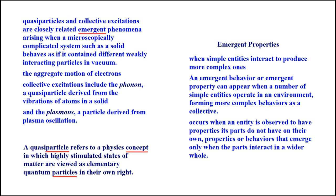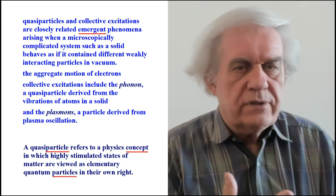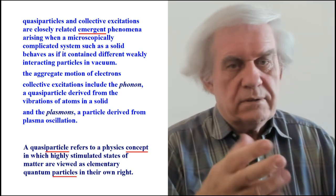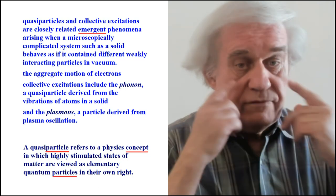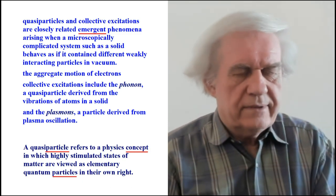Here are emergent properties. When simple entities interact to produce more complex ones, an emergent behavior or emergent property can appear when a number of simple entities operate in an environment, forming more complex behaviors as a collective. Occurs when an entity is observed to have properties its parts do not have on their own. Properties or behaviors that emerge only when parts interact in a wider whole. So we're talking about, again, behavior and emergent, meaning that out of a group, some behavior emerges, is created, is born.